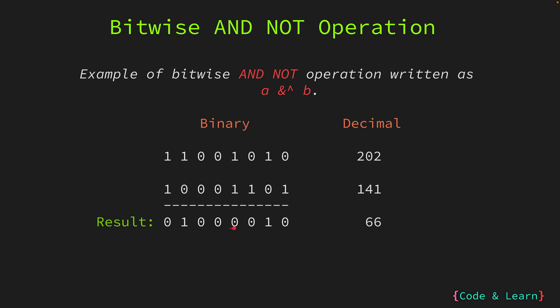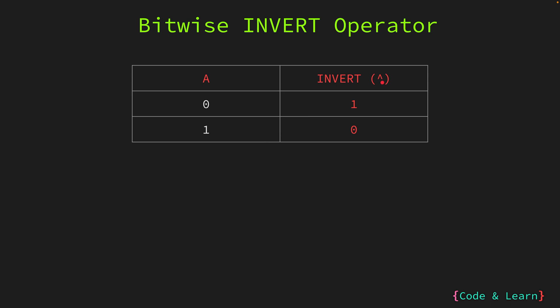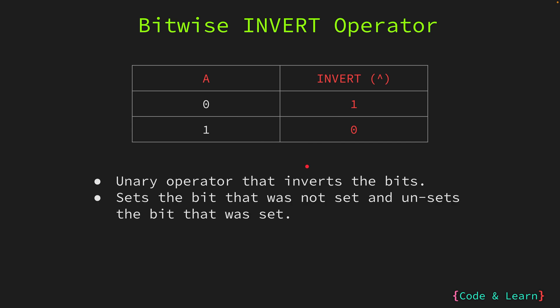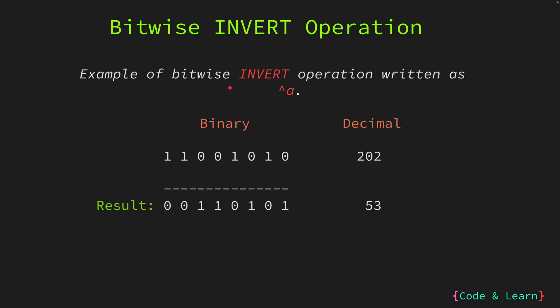After performing the AND-NOT operation on each corresponding pair of bits, the resultant binary number is 01000010, or decimal 66. Next we have the invert operator. The caret symbol serves as a binary operator when placed between two numbers, performing the XOR operation; however, when used as a unary operator with a single number, it executes the invert operation. As the name implies, the invert operation flips each bit — if a bit is initially set to 0, the invert operation sets it to 1, and if a bit is set to 1, it sets it to 0. It is also known as the NOT operator.